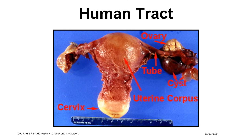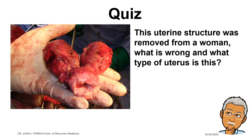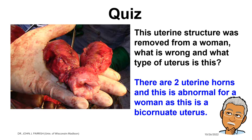The human female reproductive tract shows the ovary, uterine tube, uterine corpus or body, and cervix. In one diagram, cysts are present in the ovary, and this uterine structure was removed from a woman. The uterus shown has two uterine horns, making it a bicornuate type — which is abnormal for humans, whose normal uterus is simplex, with a well-developed uterine body and no horns. This bicornuate condition is not conducive to carrying a pregnancy to term.